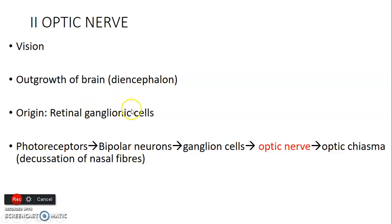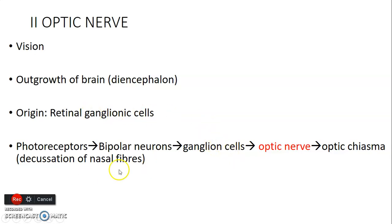It originates from the ganglion cells of the retina. The retina has three neurons that synapse: photoreceptors, bipolar neurons, and ganglion cells in that order. It is from the retinal ganglion cells that the optic nerve is formed.